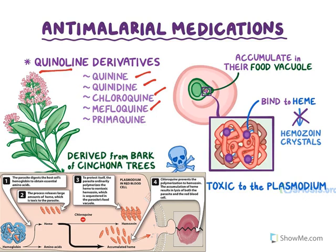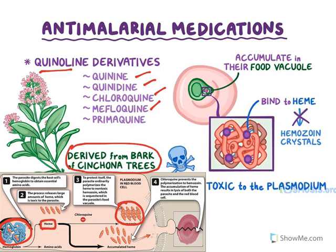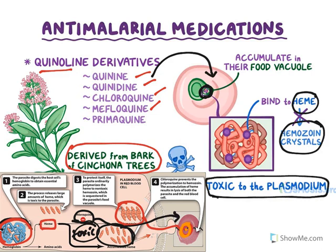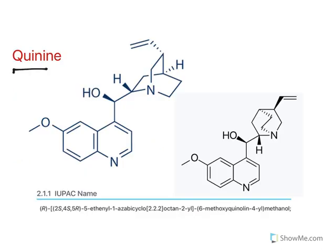Quinine, quinidine, chloroquine, and mefloquine are all derived from the cinchona tree. Plasmodium feeds on hemoglobin in the red blood cell; the globin amino acid part is taken up by the parasite, releasing heme. Heme is toxic to Plasmodium, so the parasite polymerizes it into hemozoin, which is stored in the food vacuole. Chloroquine selectively accumulates in this food vacuole, binds to heme, causes hemozoin release, and the released heme is toxic to Plasmodium — this is the mechanism of action.